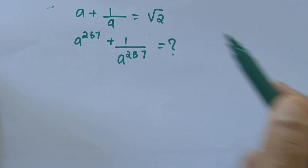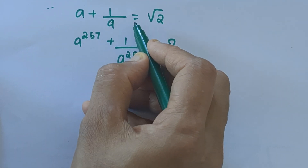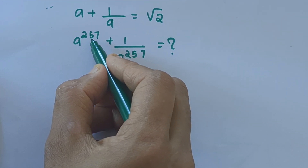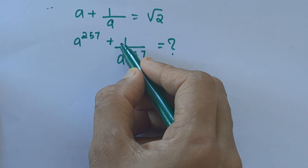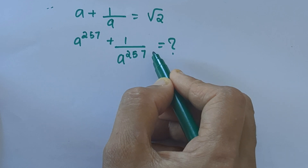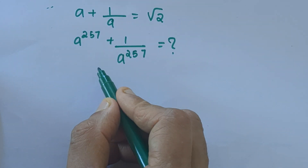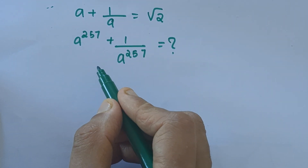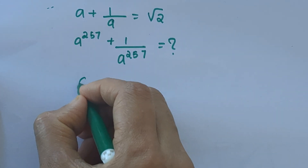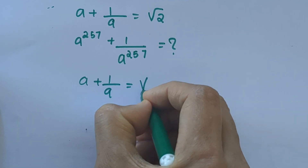Hello everyone. Our question is: a plus 1 by a equals root 2, and we have to find a raised to 257 plus 1 by a raised to 257.